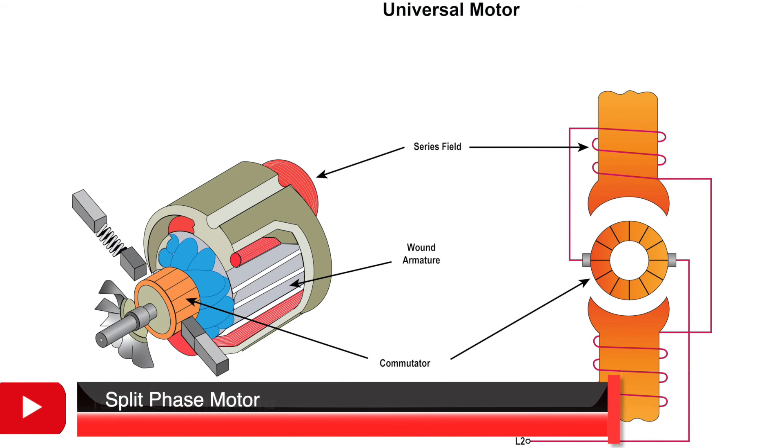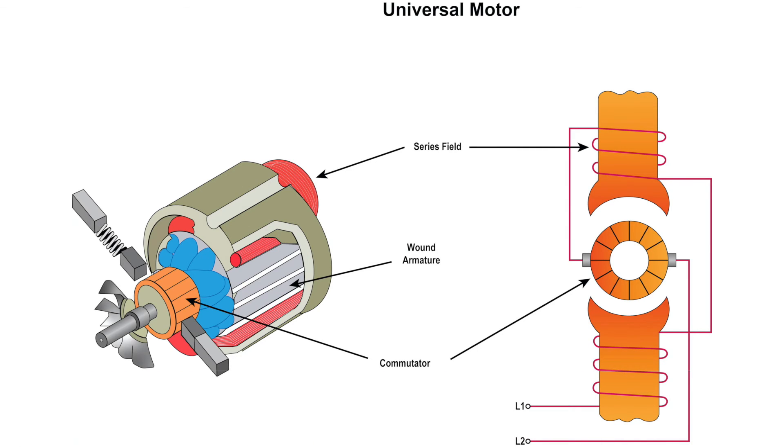The universal motor is a single phase series motor which is able to run on either AC or DC, and the characteristics are similar for both AC and DC.